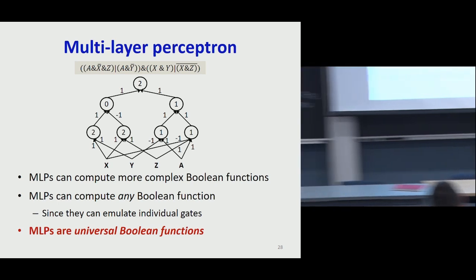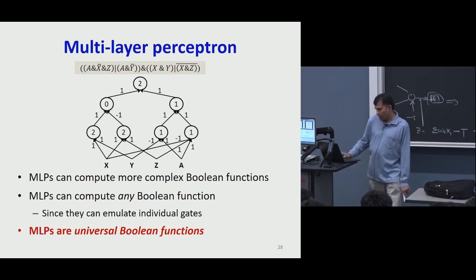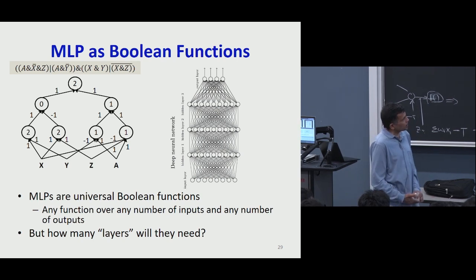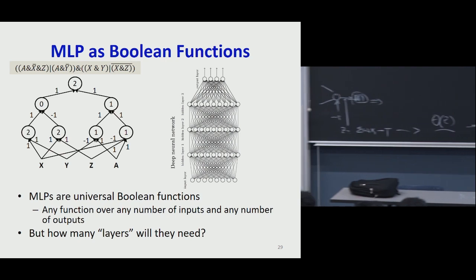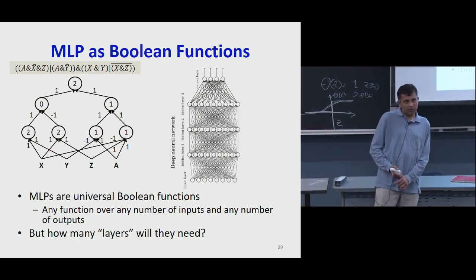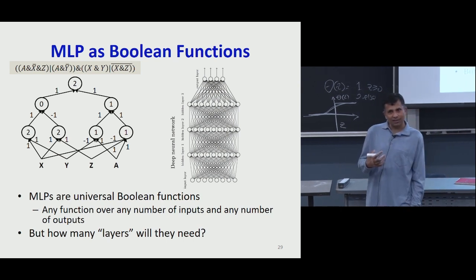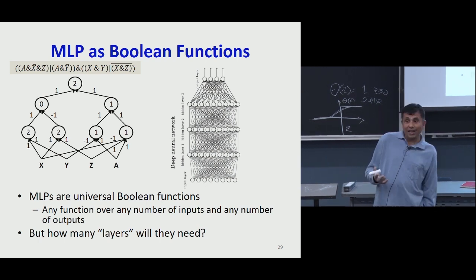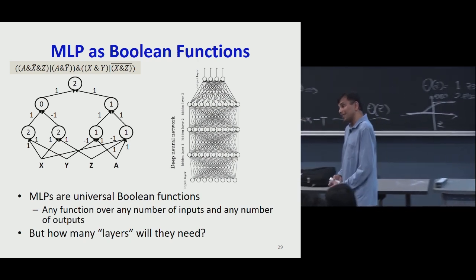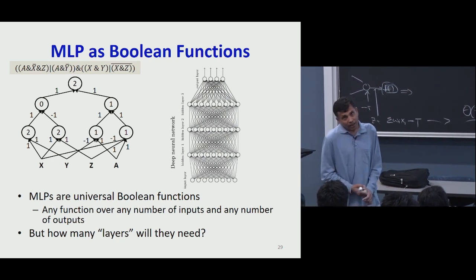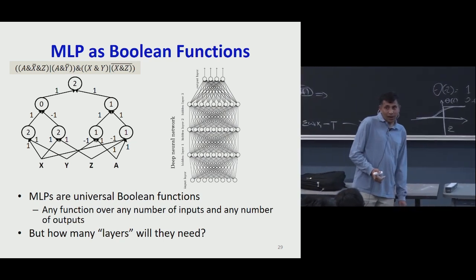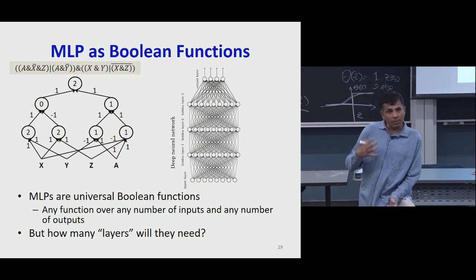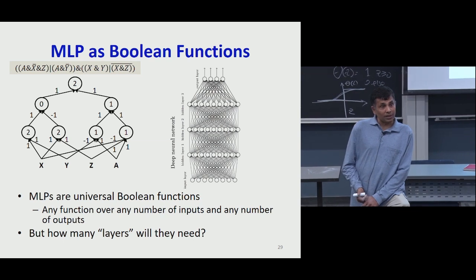So MLPs are universal Boolean functions — that we agree. But this horrible-looking function has three layers: two hidden layers and an output layer. The one to the right has four layers. For any arbitrary Boolean function, can you tell me how many layers the network will actually require? Any Boolean function is a truth table — I can explicitly list every combination of inputs and write out the output. I only need to list the specific combinations for which the output is one; for the rest, the output is implicitly zero.